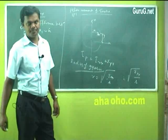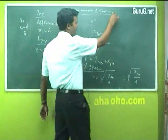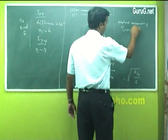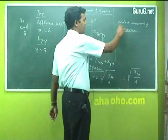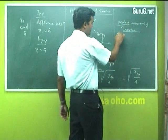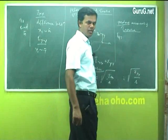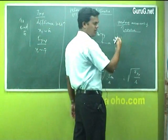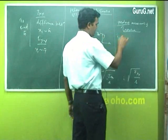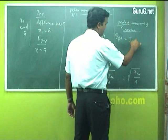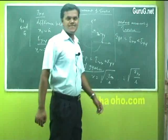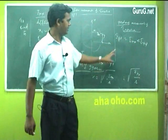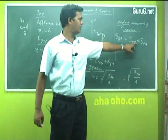Along with this we have one more topic called product moment of inertia. Product means multiplication. It is denoted Ip — different books use different symbols. Ip for product moment of inertia is equal to Ixx multiplied by Iyy. So polar moment is an addition of Ixx plus Iyy, while product moment is the multiplication of Ixx and Iyy.